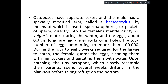Each species of octopus has its own breeding season. For example, Octopus vulgaris: mating takes place in the winter, and eggs about 0.3 cm long are laid under rocks or in holes. The total number of eggs released at a time is around one lakh. It requires 4 to 8 weeks for the larvae to hatch. Even during that time the female guards the eggs, cleaning them with her suckers.